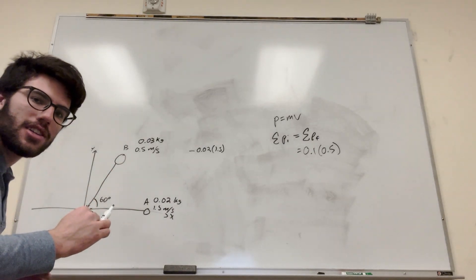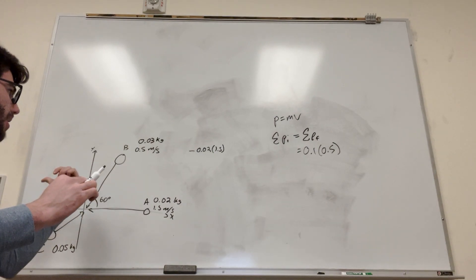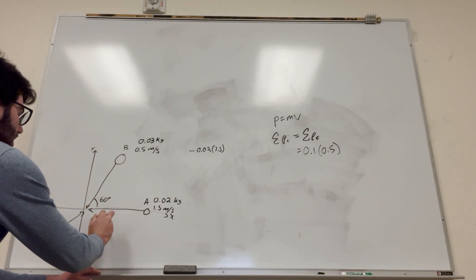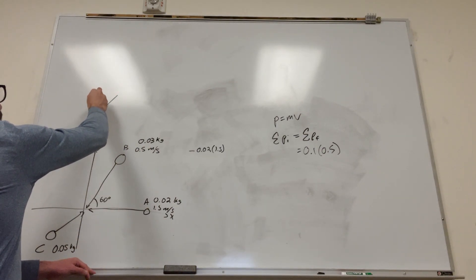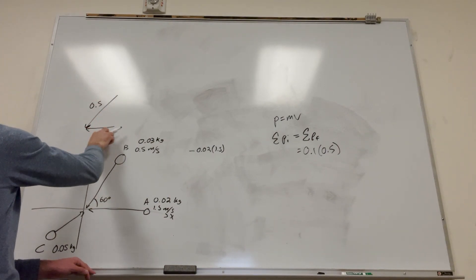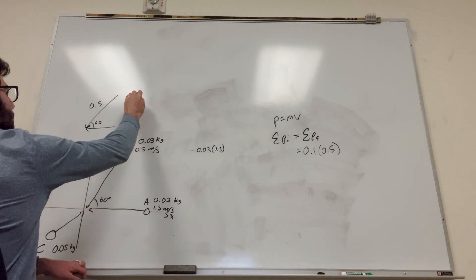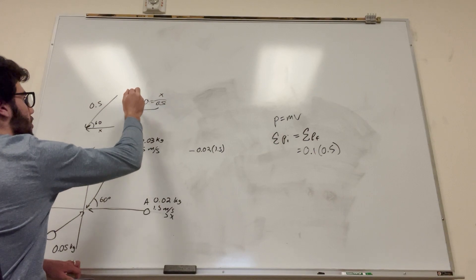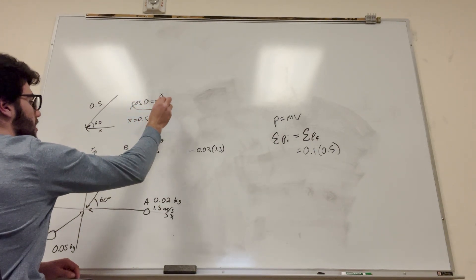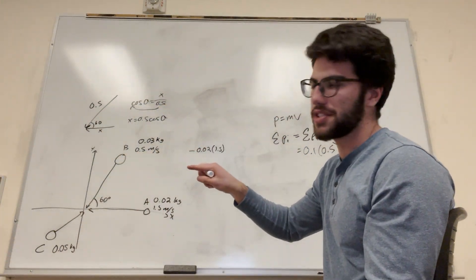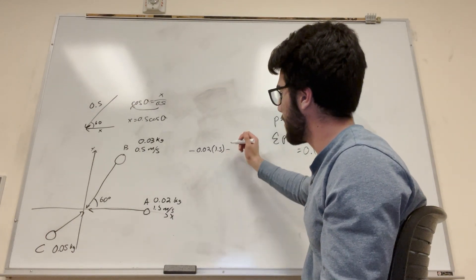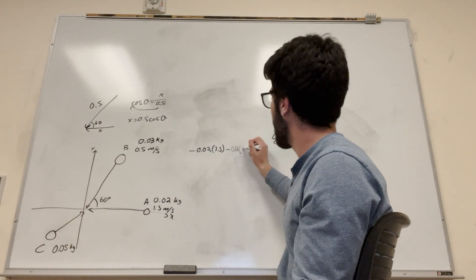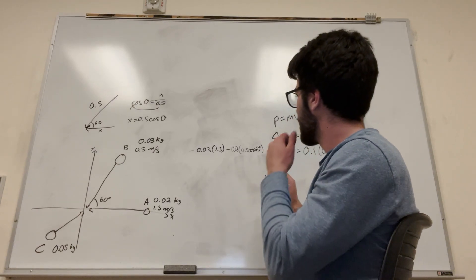So let's go to b. b is at an angle, so we need to calculate just the x part of it. The x is going to be its velocity, but then it's going to be the cosine of 60, because it's just trying to find the x component. If we look at this triangle: its velocity is 0.5, and we want just the x part. Since cosine of theta equals adjacent over hypotenuse, x equals 0.5 cosine of theta. This is also going in the opposite direction from what we want, so this will also have a negative sign. Its mass is 0.03, and its velocity is going to be 0.5 cosine of 60.